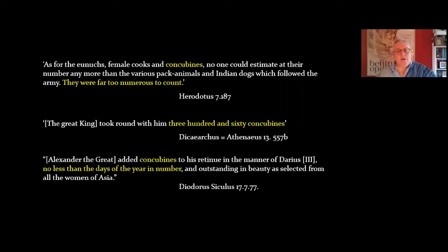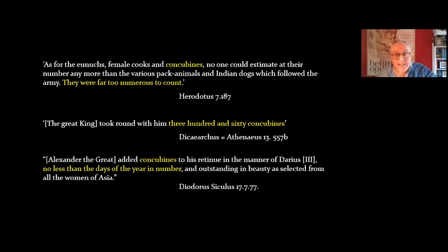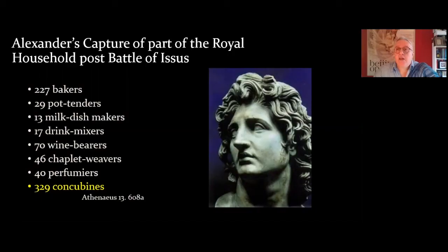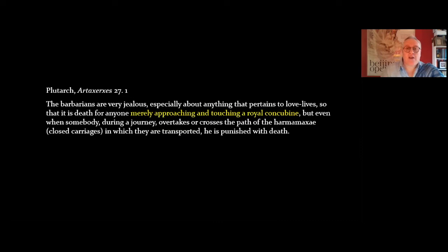As to the number of concubines within the Persian court, we don't really have much of a clue. We are reliant on the whole on Greek and Latin sources. Herodotus says that the concubines who accompanied the king were too numerous to count. Dicaiarchus says that there were 360 concubines at the Persian court, one almost for every day of the year, and that's agreed upon by Diodorus Siculus as well. Perhaps more accurate is the fact that when Alexander the Great conquered Iran and took the royal household after the Battle of Issus, amongst the booty were 329 concubines, which of course became his. Dicaiarchus says that the guarding of concubines and the preservation of their chastity was very closely done amongst the Persians — merely approaching and touching a royal concubine could lead to the death penalty.